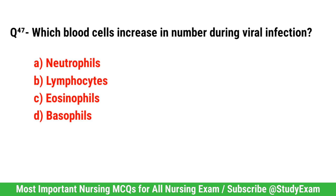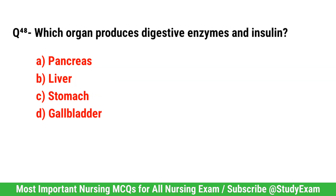Question number 47. Which blood cells increase in number during viral infection? Correct option is B. Lymphocytes.